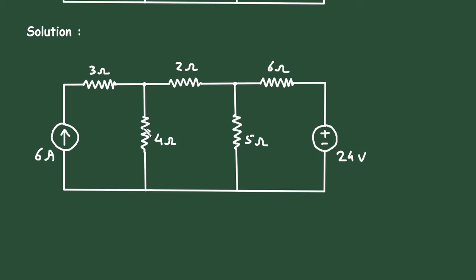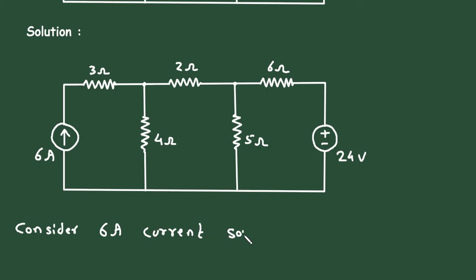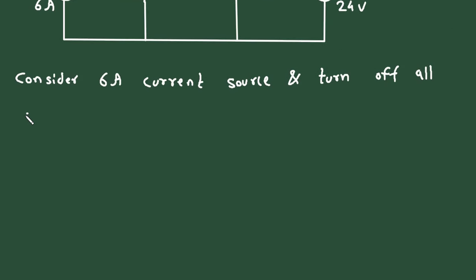Solution. As we can see here, there are two sources — one is a current source and another is a voltage source. So first of all, let's consider this current source. Consider the 6 ampere current source and turn off all other sources.